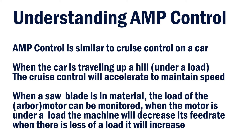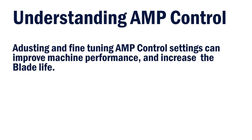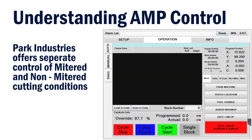Amp control is similar to cruise control on a car. The cruise control will accelerate or decelerate as needed to maintain a speed. Using Amp control will monitor the amount of load and stress on the arbor motor and the blade while it's cutting material. Then, through parameters and settings, it will adjust the feed rate accordingly. These parameters and settings can be adjusted to accommodate your materials, blades, and cutting conditions to increase the performance of your machine and the longevity of your blade.